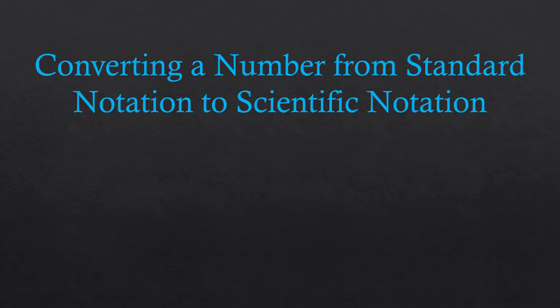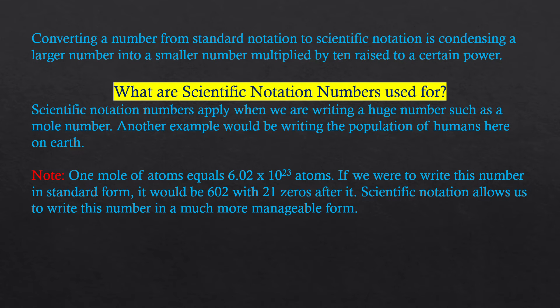In this video you're going to learn how to convert a number from standard notation to scientific notation. Converting a number from standard notation to scientific notation is condensing a larger number into a smaller number multiplied by 10 raised to a certain power.